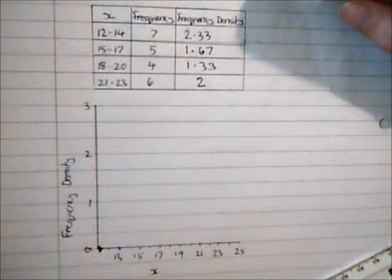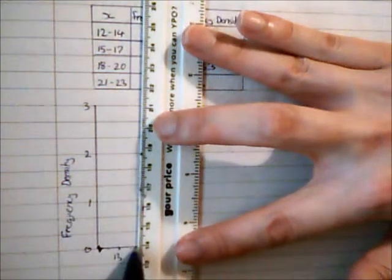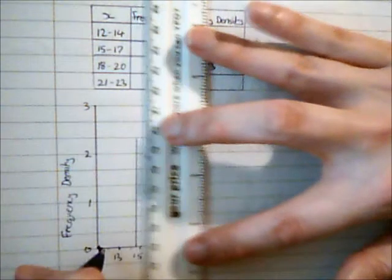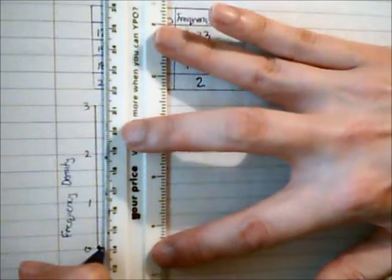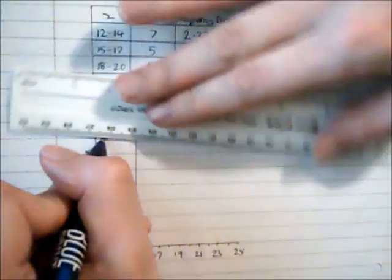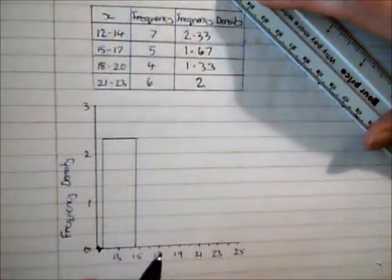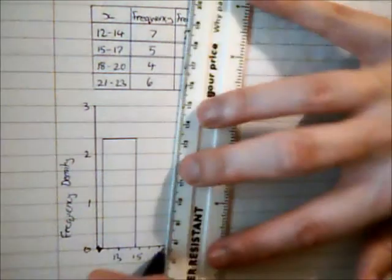So now I can start my histogram. The first one begins at 11.5 and it goes up to 14.5, and that's to a third. So 14.5 is here, and then 11.5 is here. So the next one goes from there to 17.5, and that's up to 1 and 2 thirds.